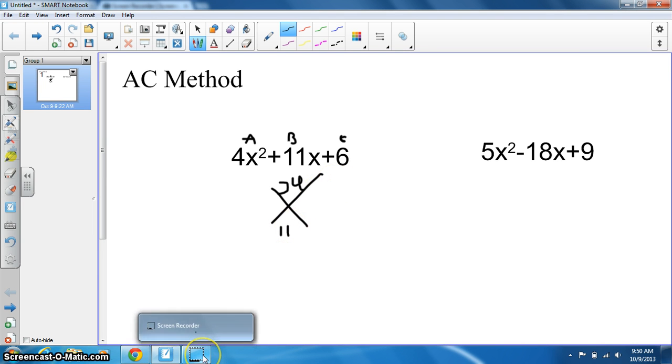We take 24 and find multiples. We need multiples of 24 that when added together give us 11. In this case, 8 times 3 equals 24, and 8 plus 3 equals 11. So we put 8 and 3 here.